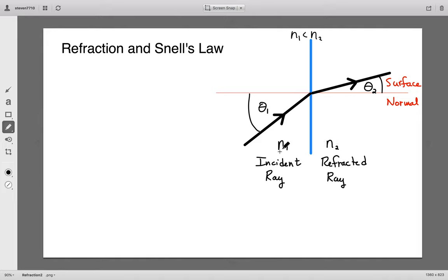N1 is the index of refraction where the incident ray lives, and N2 is the index of refraction of the material that the ray is going to go into. In this particular case, the index of refraction N1 is less than N2.